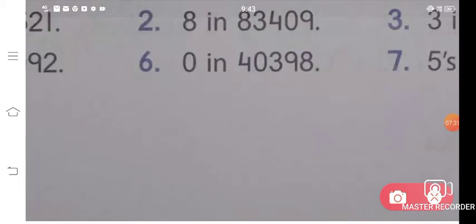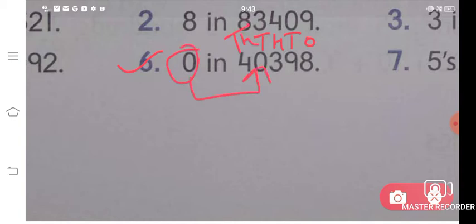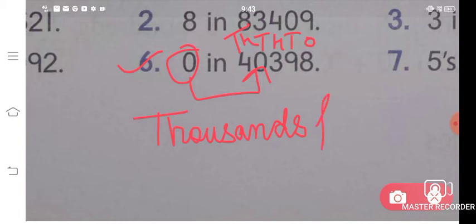Next is the sixth question. Write the place values: ones, tens, hundreds, thousands, ten-thousands. Here zero is asked — zero is coming to the thousands place. So we will write: thousands place. Zero is coming on the thousands place. This is the answer for your sixth question.